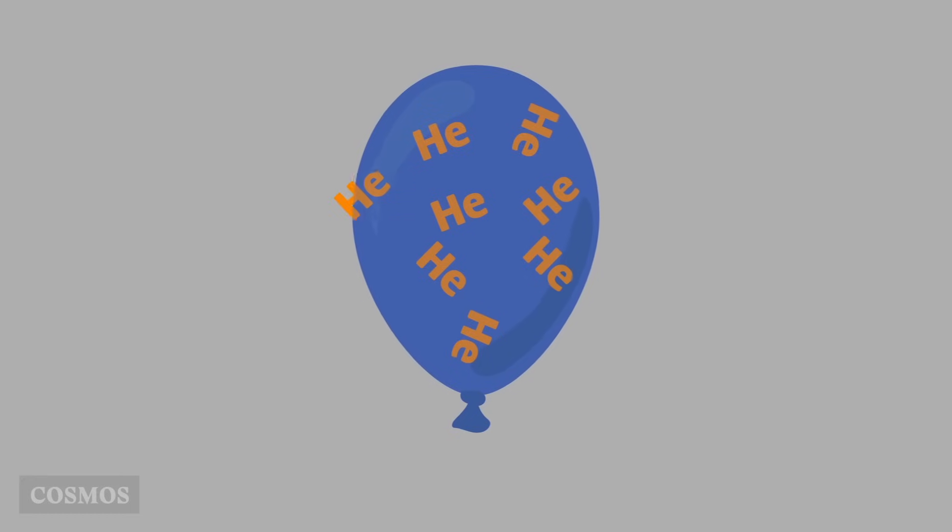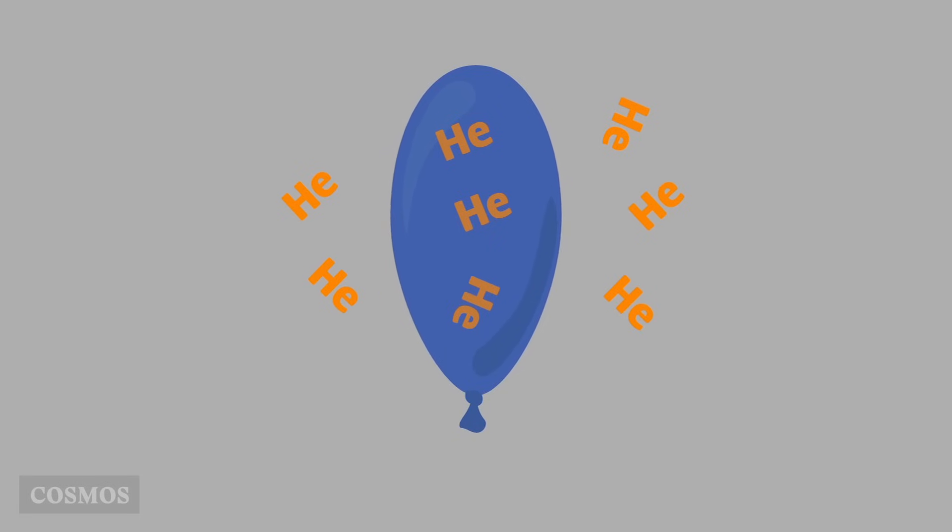For example, a helium balloon that's been left for a couple of days gets smaller and softer because the helium has slowly diffused through the skin of the balloon into the surrounding air.